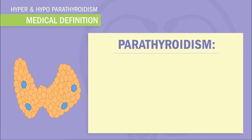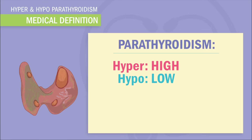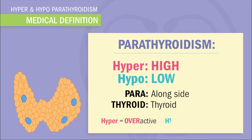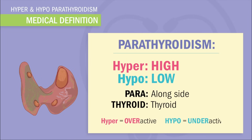So let's break down the terms. Hyper means high and hypo means low, para means alongside, and thyroid means, well, thyroid. So hyper anything always means overactive, like a hyper person. And hypo is the exact opposite — underactive, like a super boring person.